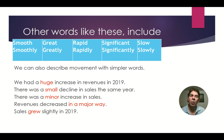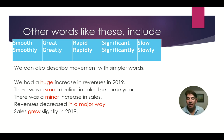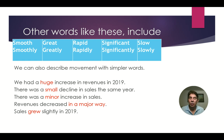We can also use simpler words to describe these movements. For example: we had a huge increase in revenues in 2019. There was a small decline in sales the same year. There was a minor increase in sales. Revenues decreased in a major way. Sales grew slightly in 2019.